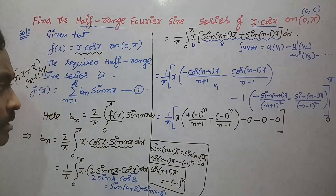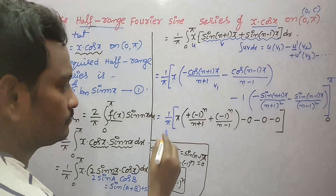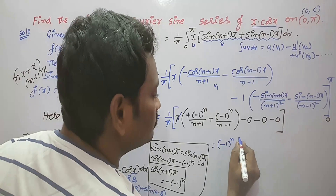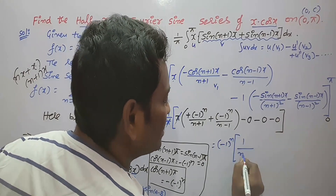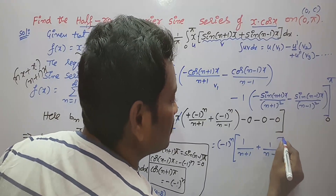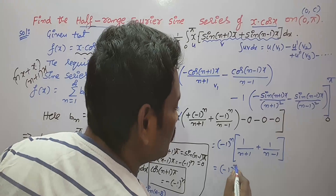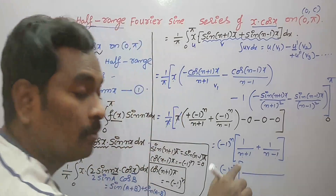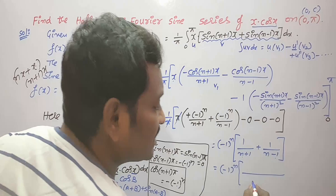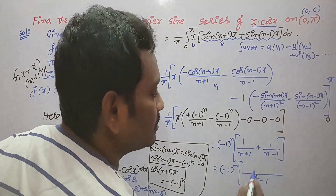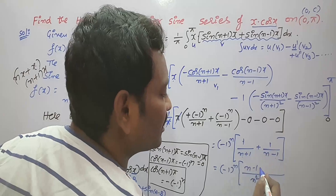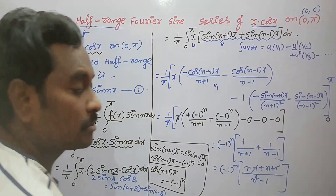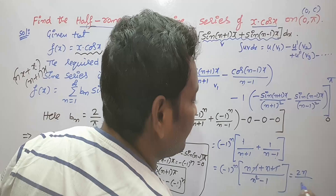The π in the numerator and the π in (1/π) cancel. (−1)^n is a common factor, giving (−1)^n · [1/(n+1) + 1/(n−1)]. Taking LCM (n+1)(n−1) = n²−1, we get numerator n−1 + n+1 = 2n. So b_n = 2n(−1)^n / (n²−1).